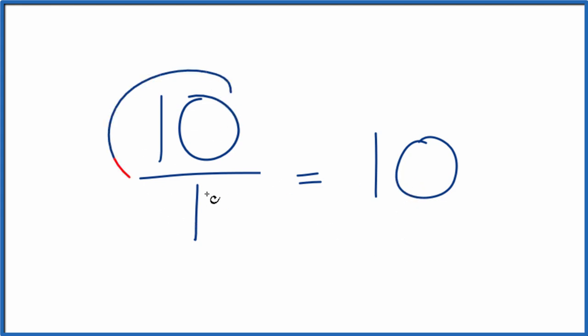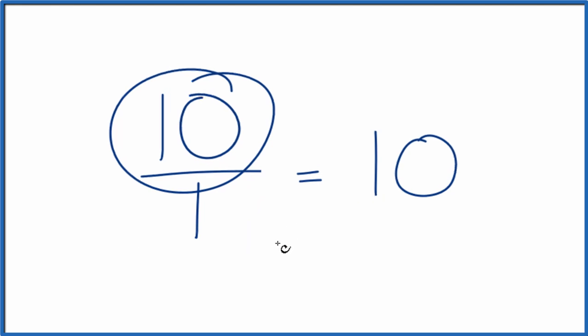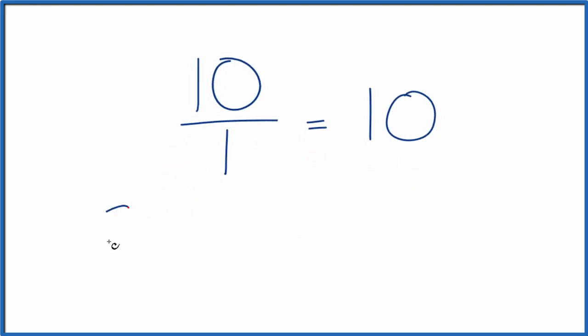So if we took the numerator here and the denominator and doubled them, multiplied them both by 2, that would give us another equivalent fraction to 10. 2 times 10, that's 20. 2 times 1, that's 2. So 20 over 2, that's equivalent to 10 over 1 or 10.